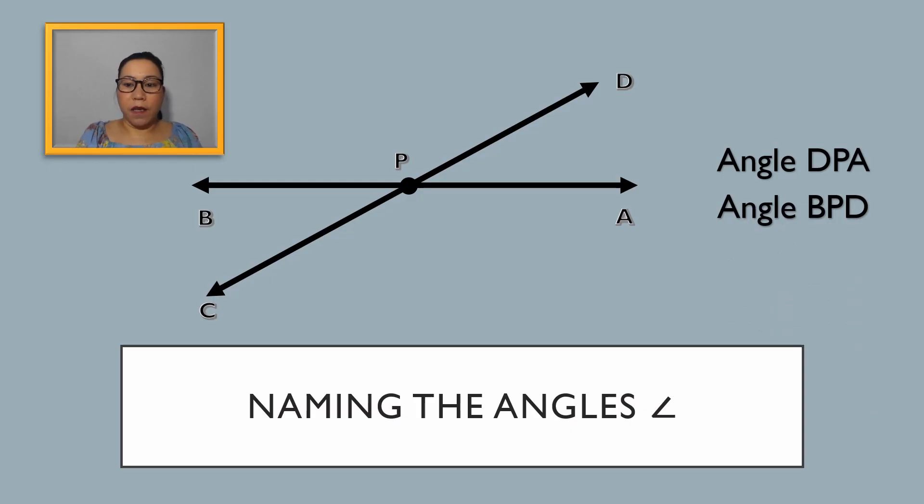When naming angles, instead of writing the word angle again and again, we can use this symbol to replace the word angle. Now, this symbol indicates the angle we're referring to.